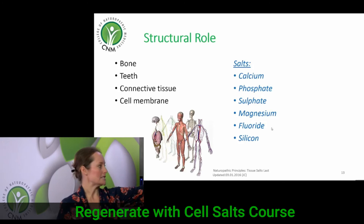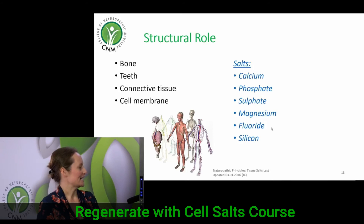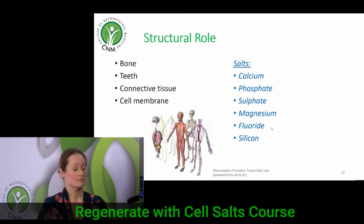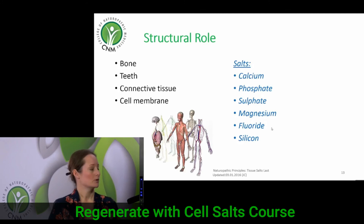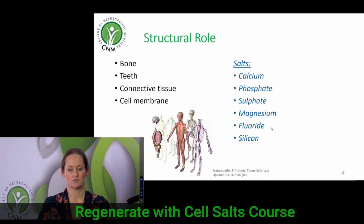Magnesium is also important. Calcium and magnesium are like two siblings in rivalry — they don't like being in the same space at the same time — but these two minerals are vitally important for structural integrity across a number of different structural tissues. And then lastly, silicon, or silica as it's referred to in tissue salt terms, is also fundamental to structural integrity.